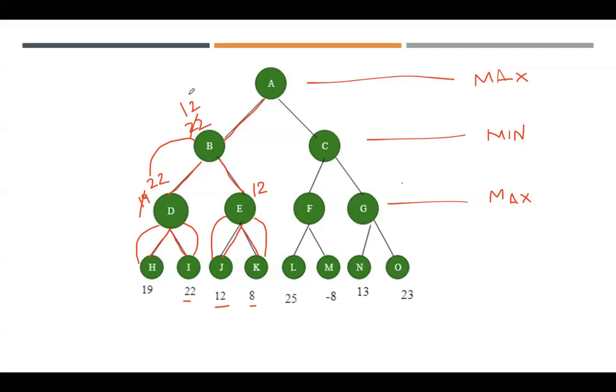Now this 12 will be sent back to its parent. The parent of B is A, so 12 will be sent back to parent A. The left part of this root node is over now, so traverse towards the right side. Again, same process—move towards the left side first.